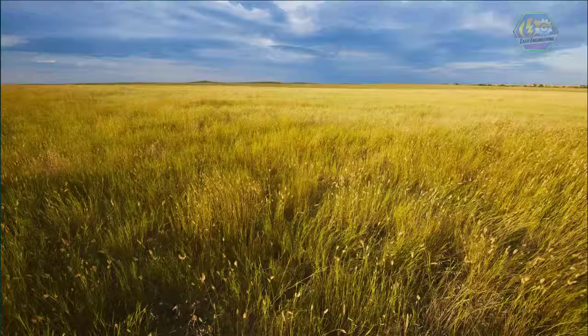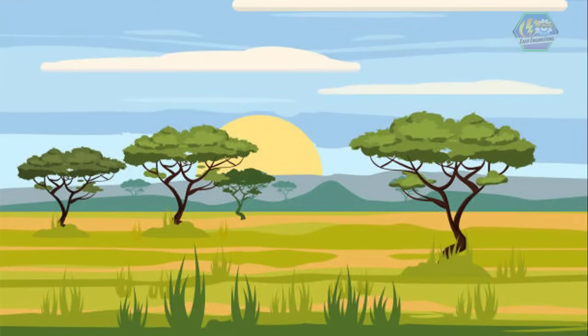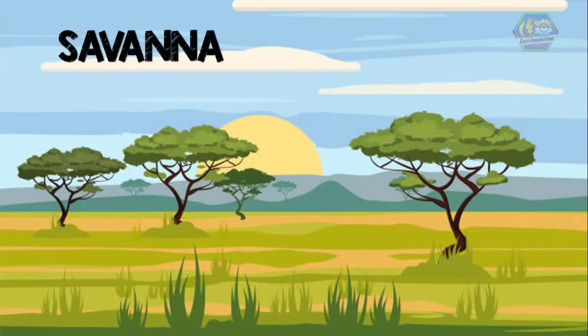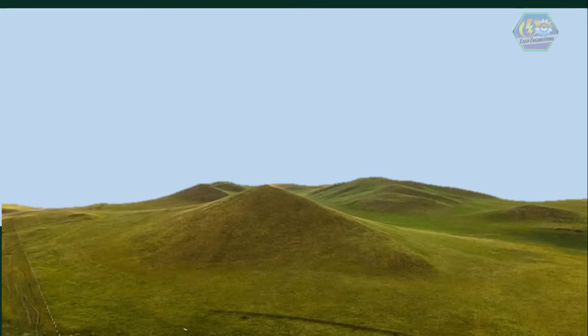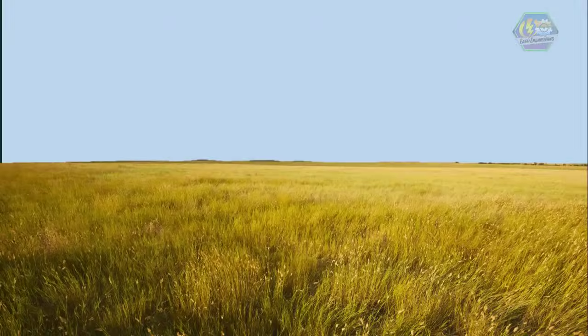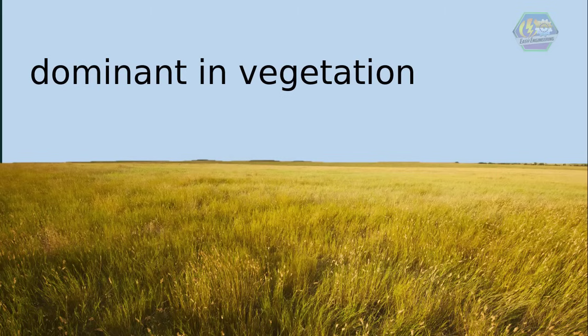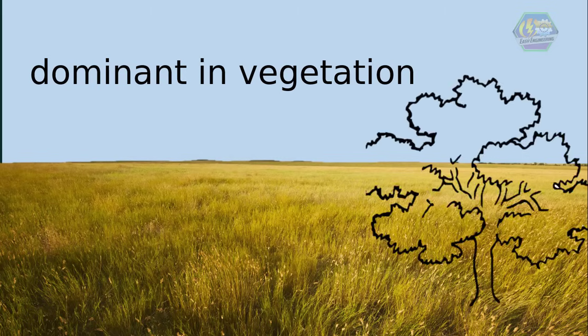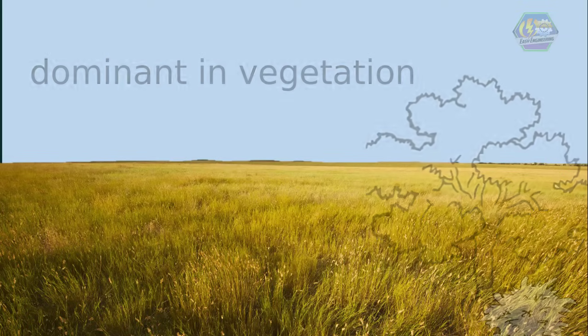So what are the types of grasslands? There are three main types: temperate grasslands, tropical grasslands which are also known as savannas, and steppe grasslands. Temperate grasslands have grasses which are dominant in vegetation, there are no trees and large shrubs, and the climate varies more from summer to winter with less rainfall.